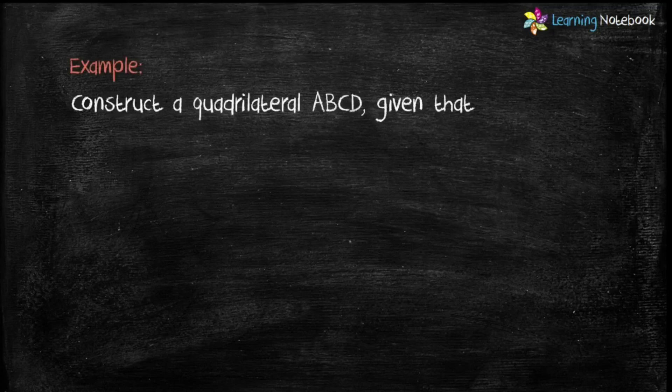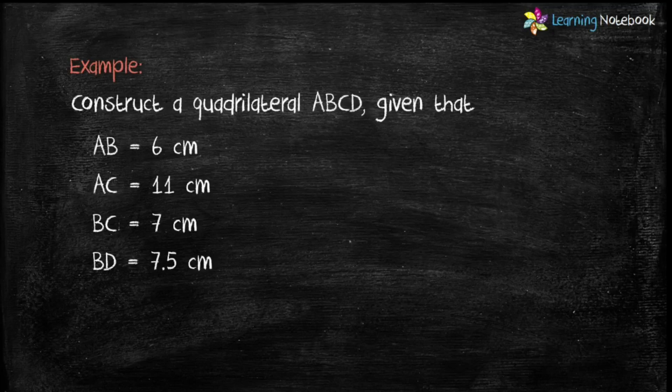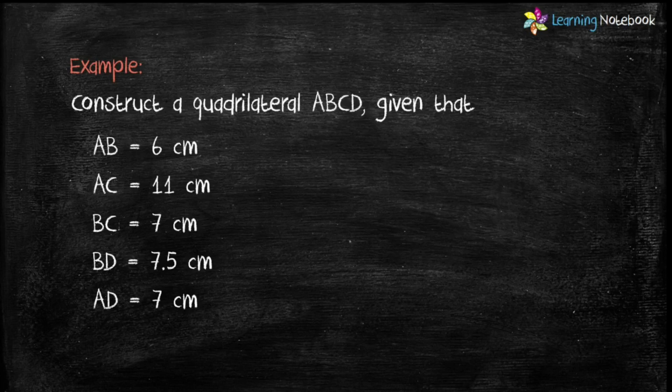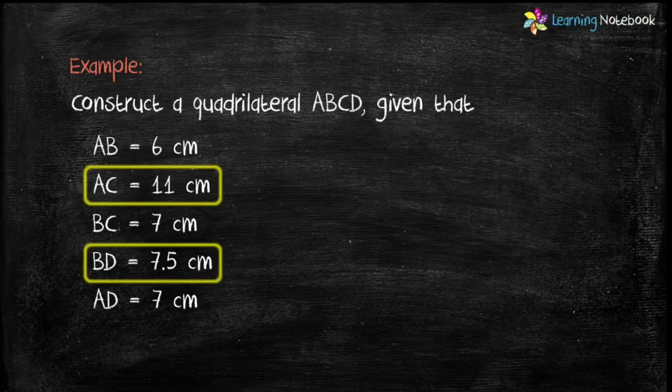The question is to construct a quadrilateral ABCD given that AB equals 6 cm, AC equals 11 cm, BC equals 7 cm, BD equals 7.5 cm, and AD equals 7 cm. Students, first we have to identify the sides and diagonals of quadrilateral. We have to construct quadrilateral ABCD, so it means AB, BC, CD, and DA are the sides of the quadrilateral, while AC and BD are the diagonals of the quadrilateral. So here in this question we are given three sides and two diagonals of the quadrilateral.